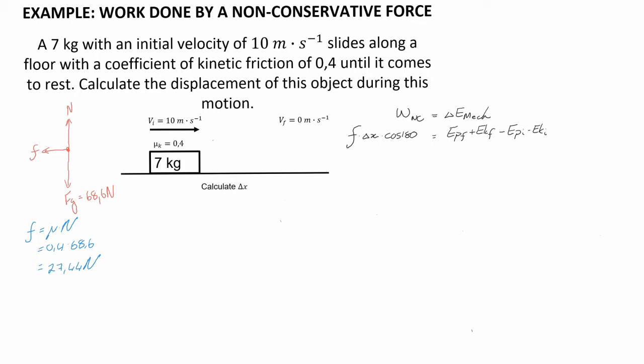What this now allows us to do is put into the formula the work done by the non-conservative force, which is equal to the object's change in mechanical energy. The only non-conservative force acting on this object is the friction force, so the work done by that is the friction force multiplied by the displacement of this object and the cosine of the angle between them, where friction and motion are always opposite to each other.